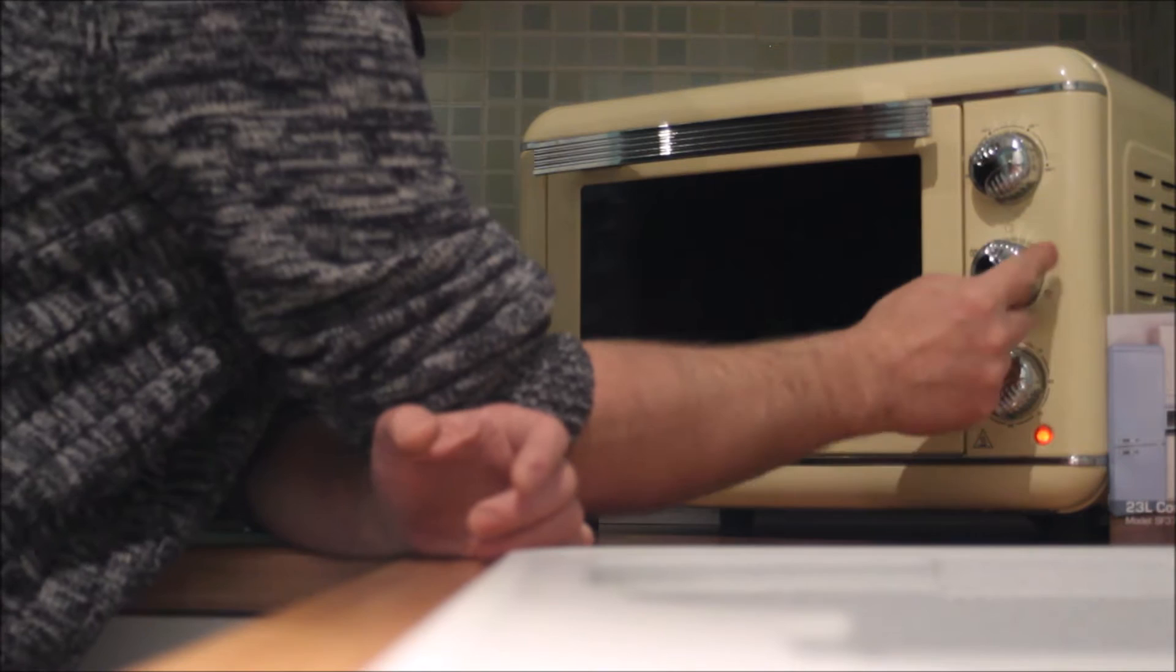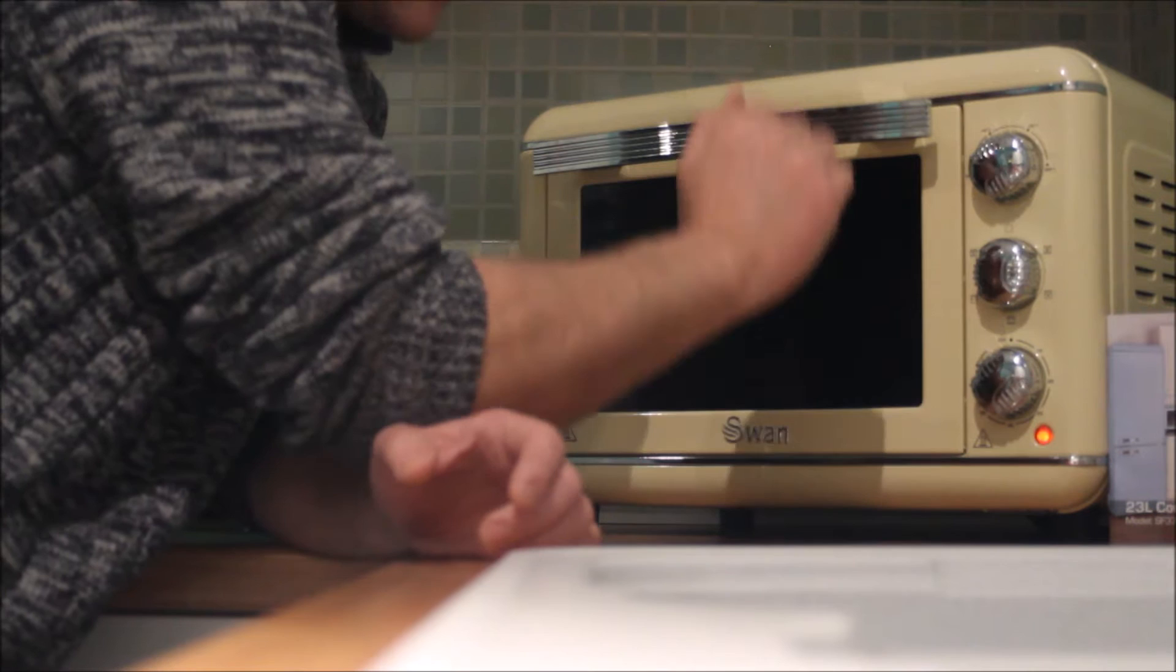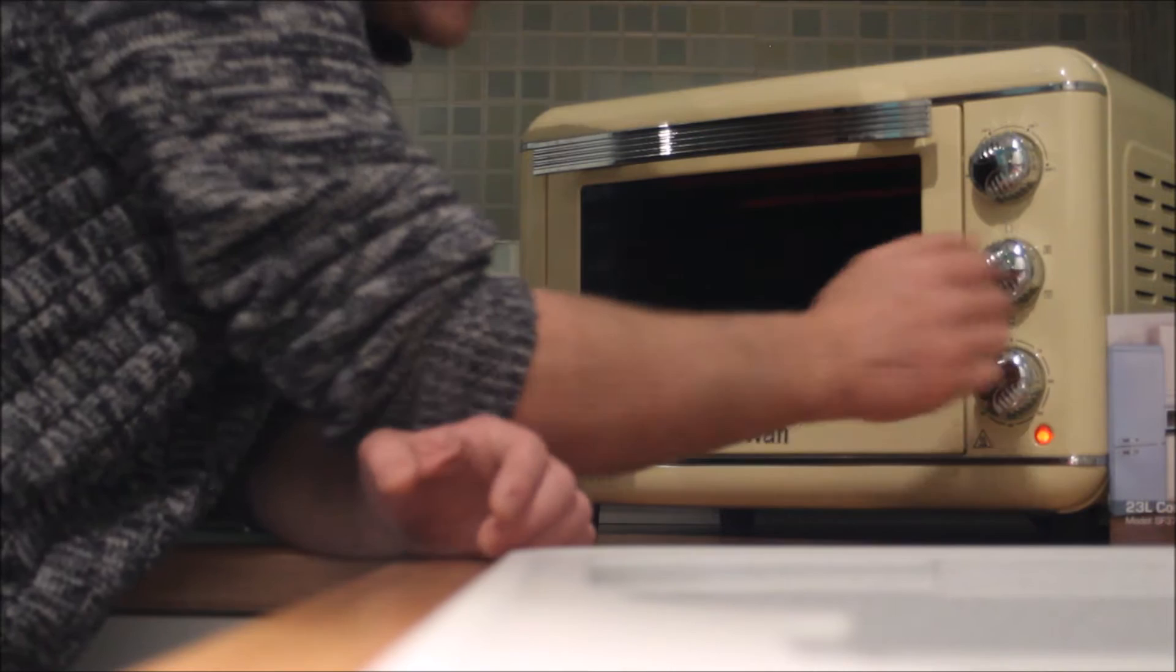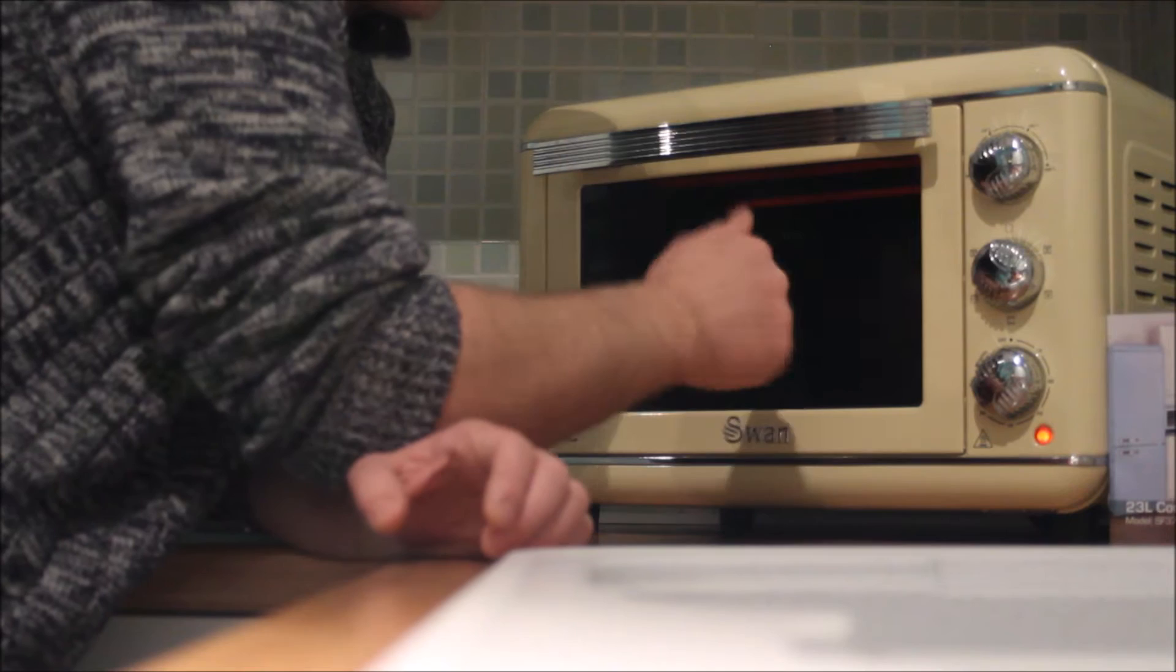Then we have convection top heating only. Then we have no convection just top and bottom heating. On the fifth setting we have top heating element with rotisserie. And then on the last one we have top and bottom heating elements with rotisserie also.